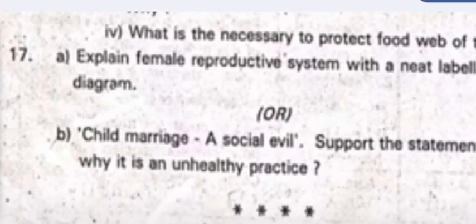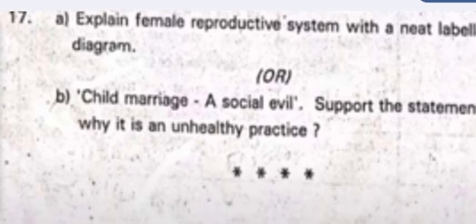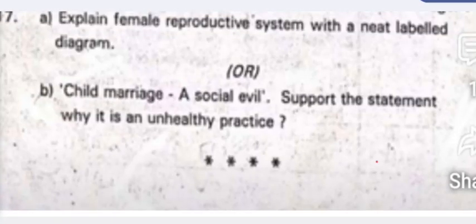Question 17a: explain the female reproductive system with a neat labeled diagram. OR 17b: child marriage is a social evil — support the statement and explain why it is an unhealthy practice. This completes the question paper.